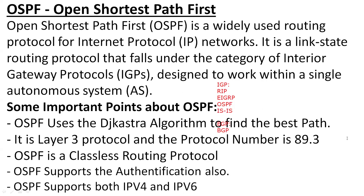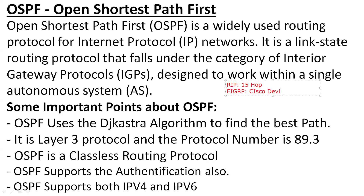Why is OSPF important? Comparing OSPF with previous protocols: RIP was limited to 15 hop count, which is why it cannot be used over larger networks, and RIP doesn't have an advanced method to select the best path. EIGRP is limited to Cisco devices only — it is Cisco proprietary — and can work up to 100 hop count. It is a fast protocol, so if you have a Cisco-only network, EIGRP is preferred.